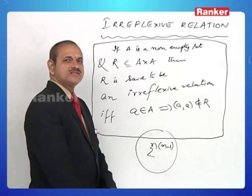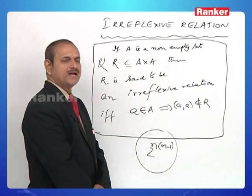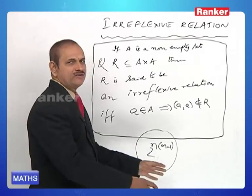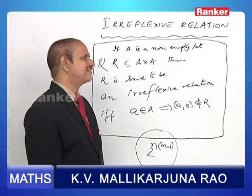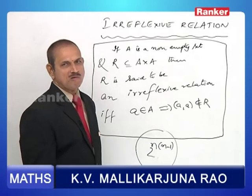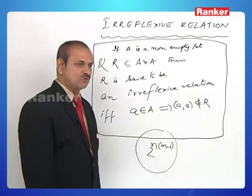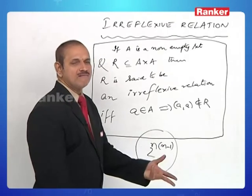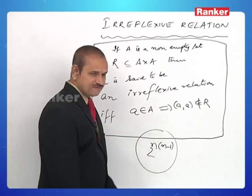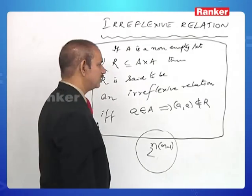Now let us see the other side of symmetry — another development of the symmetry character. Regarding symmetry, there is another type of relation called anti-symmetric relation. We will now be going to do that. Recall the formula 2^(n(n-1)) for the number of irreflexive relations. For example, if A = {a, b, c}, the number of irreflexive relations is 2^(3×2) = 2^6.